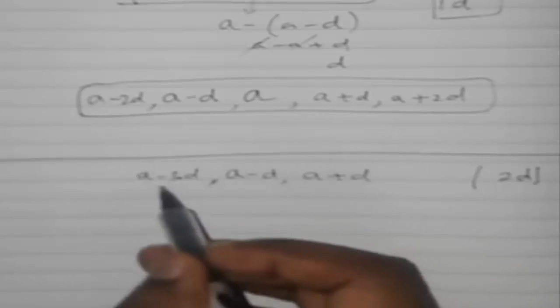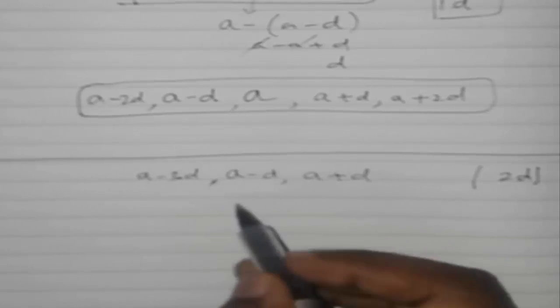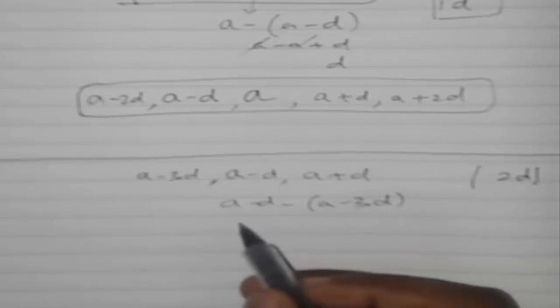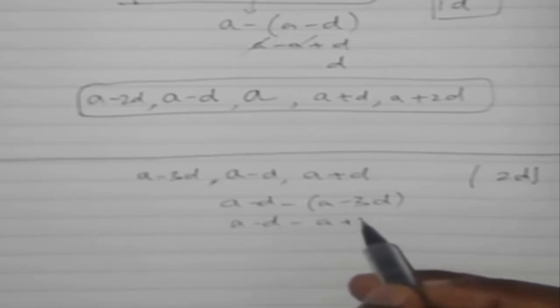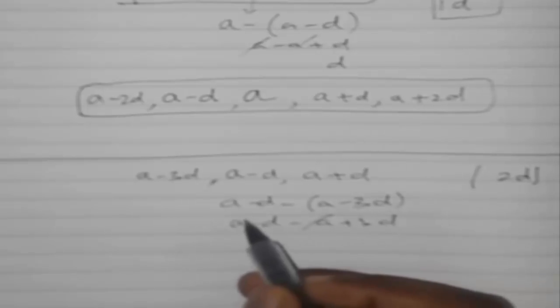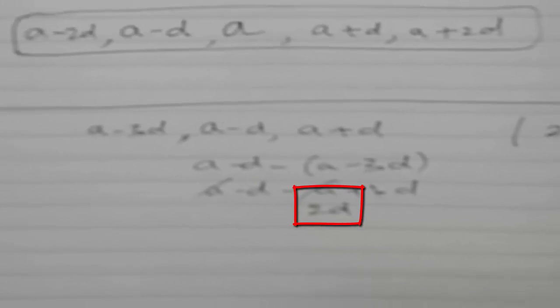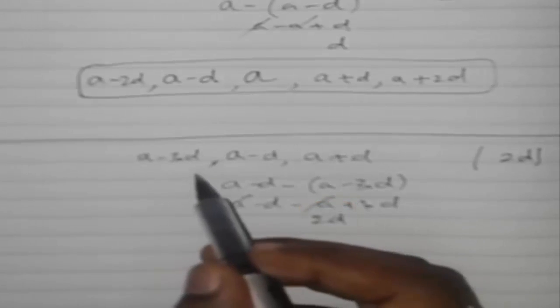The reason is if I subtract it from a minus 3d, and if you multiply with negative, negative and positive get cancelled. 3d minus d will remain as 2d. So now since four terms, it's a minus 3d, a minus d, then it should be a plus d.